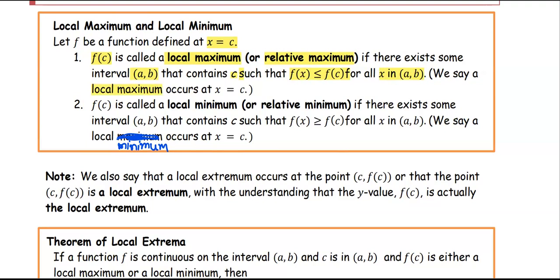Similarly, f is called a local minimum or relative minimum if there exists some open interval (a, b) that contains c such that f(x) is greater than or equal to f(c) for all x in the open interval (a, b). We say a local minimum occurs at x equals c.